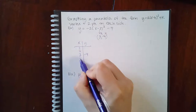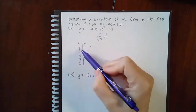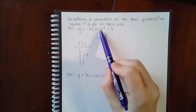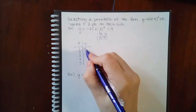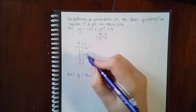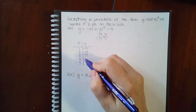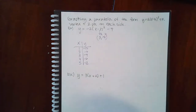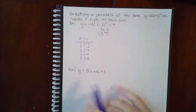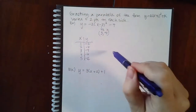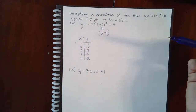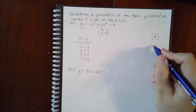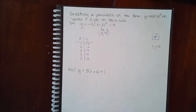When making the chart, the vertex goes in the middle. Pick two numbers lower and two numbers higher, then plug them into the equation. You can use your calculator. The y-values work out to -8, -12, -6, -2, -6. Plot those points in the graphing tool — either click to place dots or hit the coordinate-entry button to type in values like (-1, -12).